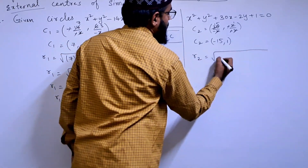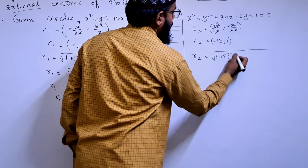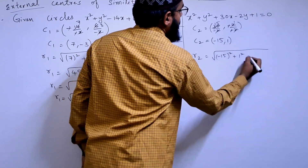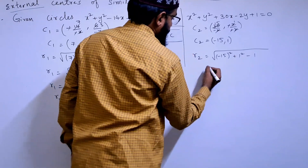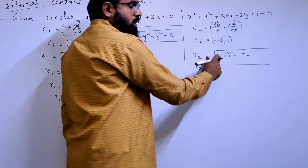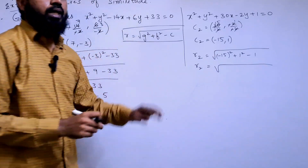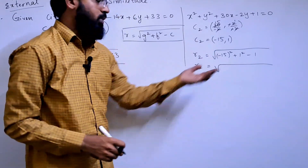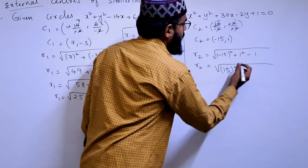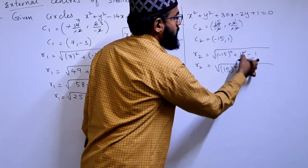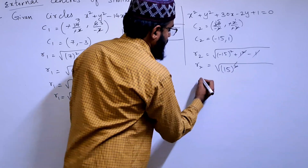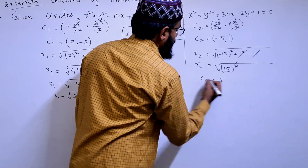For the second circle, r2 = √(g² + f² − c) = √(15² + 1² − 1) = √(225 + 1 − 1) = √225 = 15. Therefore r2 = 15.